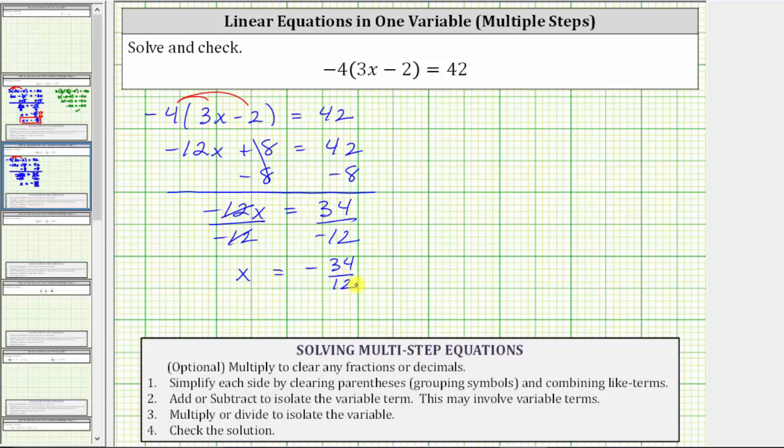But we do need to simplify the fraction. The greatest common factor between 34 and 12 is two. To simplify, we divide 34 by two and 12 by two. This gives us x equals negative. In the numerator, 34 divided by two is 17. 12 divided by two is six. The solution is x equals negative 17 sixths.